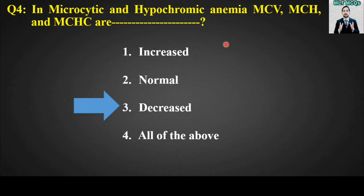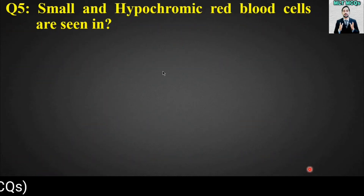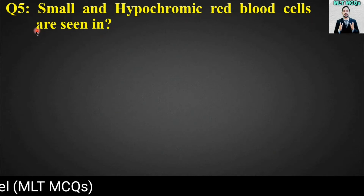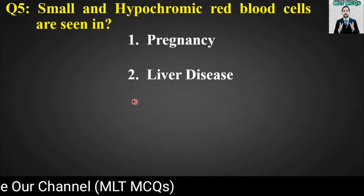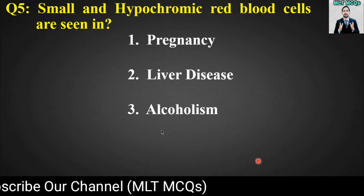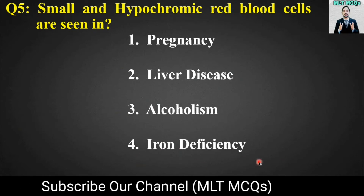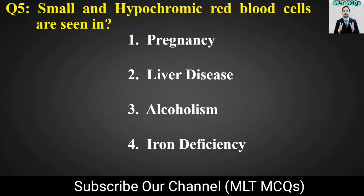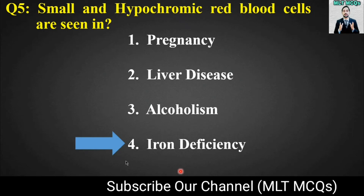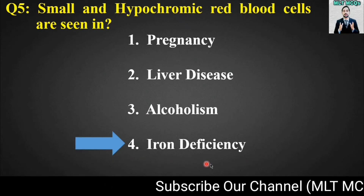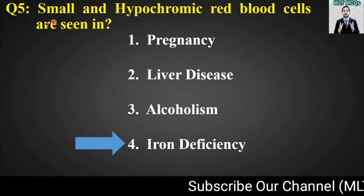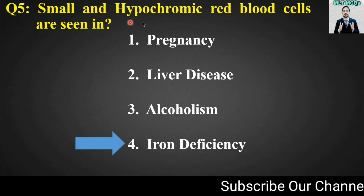MCQ number five: Small and hypochromic red blood cells are seen in which condition? Options are: pregnancy, liver disease, alcoholism, or iron deficiency. The right answer is option number four — iron deficiency. In iron deficiency anemia, the red blood cells are smaller and hypochromic.